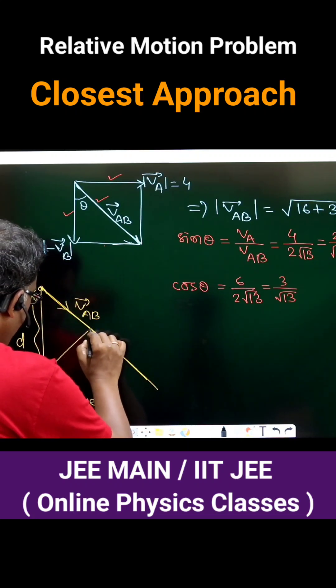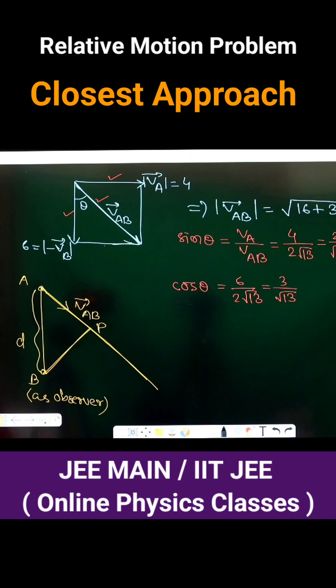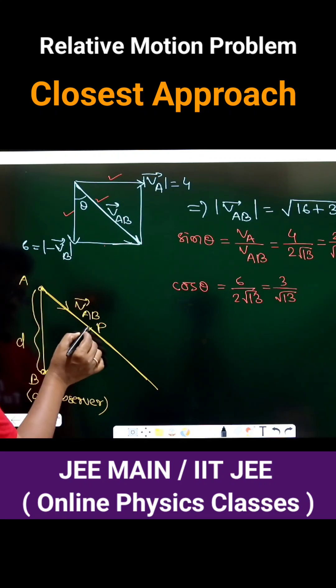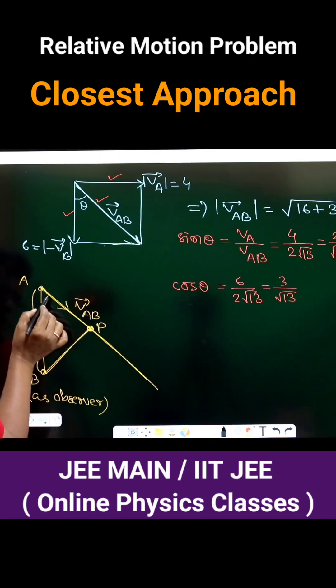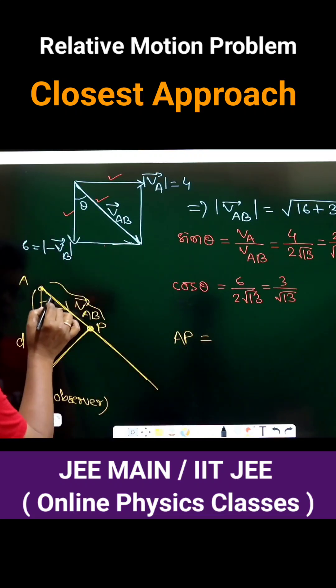So if this is the relative path, if I drop a perpendicular on this, let this be P. So if P is the point, when A travels this much distance by relative velocity, to travel AP—AP means lengthwise, the length of AP.